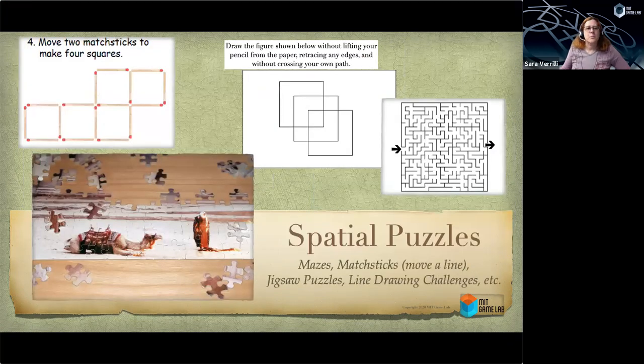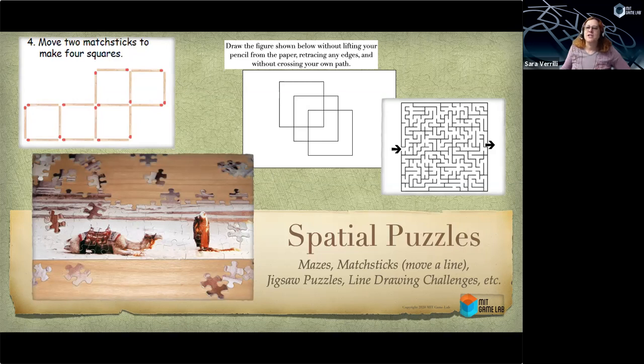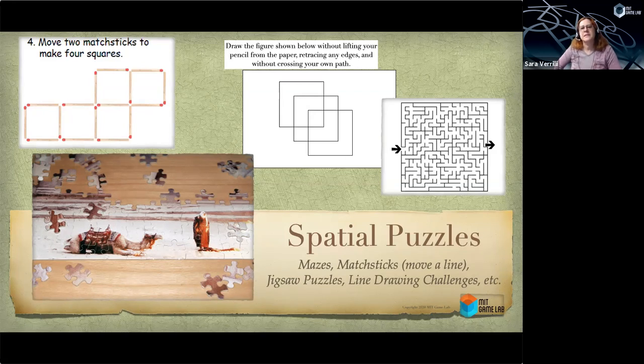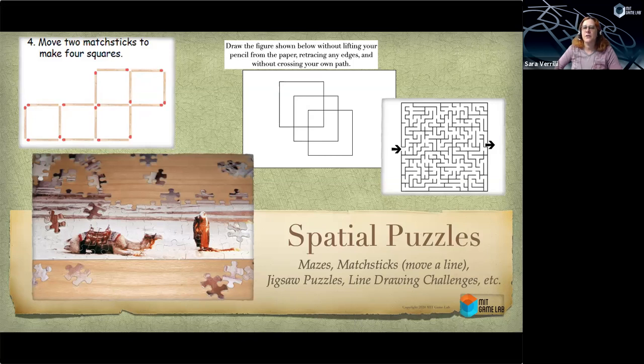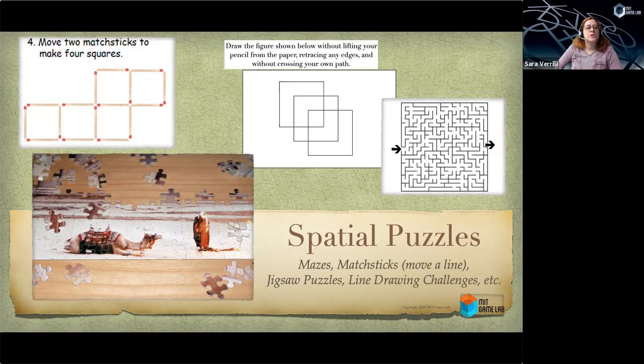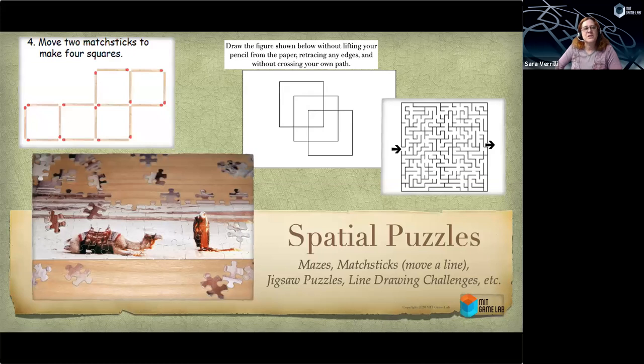Not all spatial puzzles are purely physical though. And yes, a jigsaw puzzle is clearly a physical puzzle, but it's not so much about manipulating things in 3D space as it is seeing in your mind's eye how things fit together. Mazes trace a path through a confusing set of lines and dead ends. Matchstick puzzles ask you to move just one or two lines to make a completely different figure. And the line drawing challenge is one where your goal is to draw the figure without ever moving your pencil from the paper, without retracing any edges, and without ever crossing your own path. This particular one was originally invented by Lewis Carroll, but there are a lot of other different shapes that ask the solver to do very similar things.